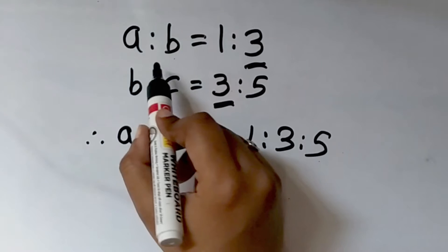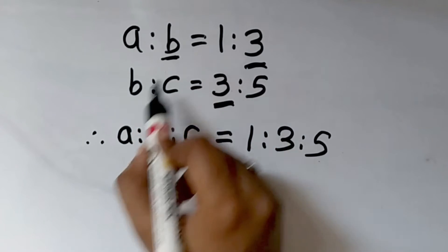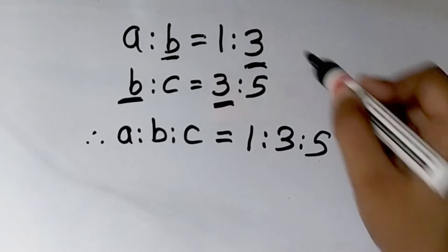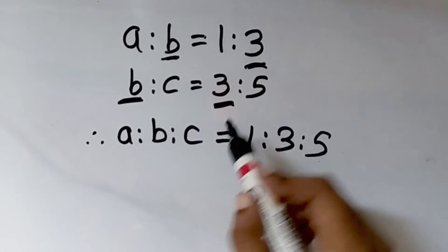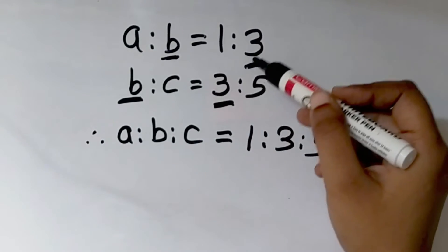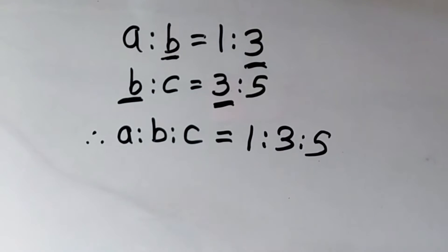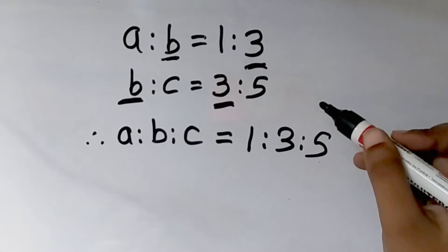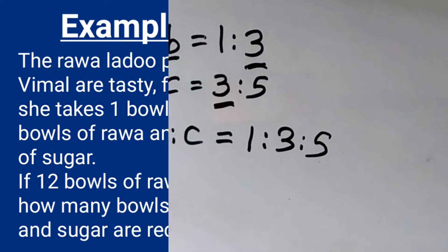So this is how we combine 2 ratios to get a ratio of 3 terms. For combining the ratio, you have to remember carefully: the second term of the first ratio and the first term of the second ratio should be the same, and the value should also be the same. Here the value of B is 3 in both ratios. You will understand this more clearly when we solve more examples, so we will solve 3 examples related to this.